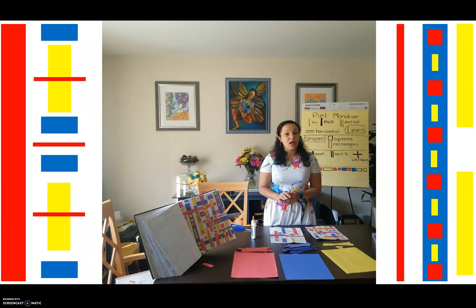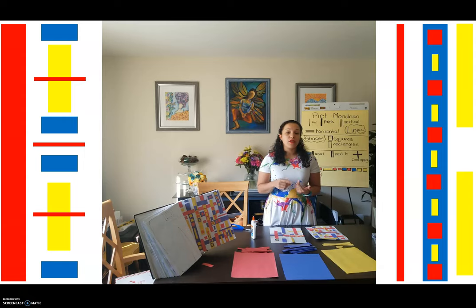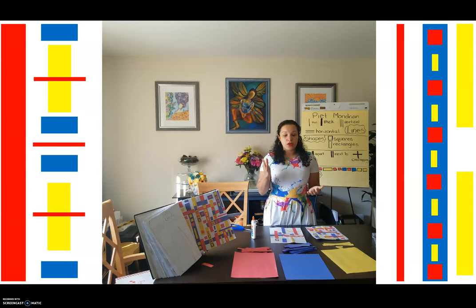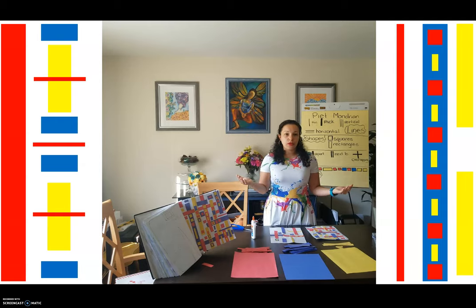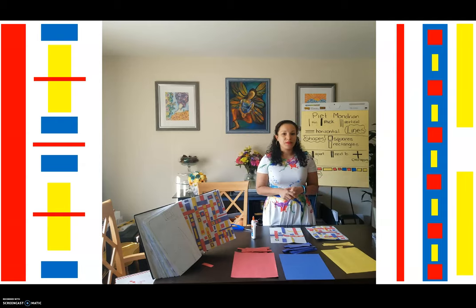You can also color it in if you don't have construction paper. Or you can take pictures of objects — toys, things in your house — that are red, blue, and yellow. There are so many different ways for you to do this project. I can't wait to see what you come up with.